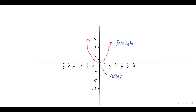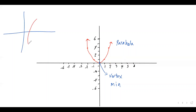If the parabola opens up, the vertex is a minimum point. If the parabola opens down, the vertex is a maximum point.